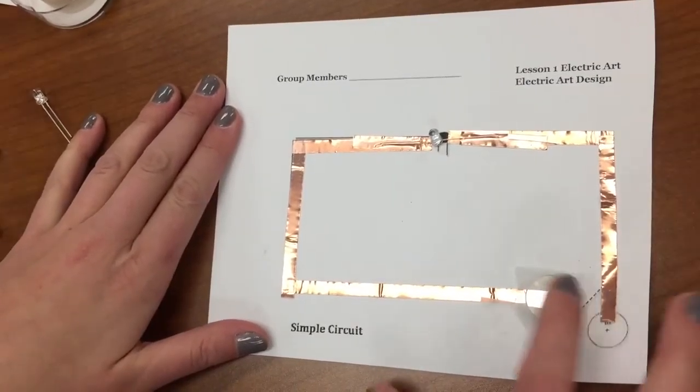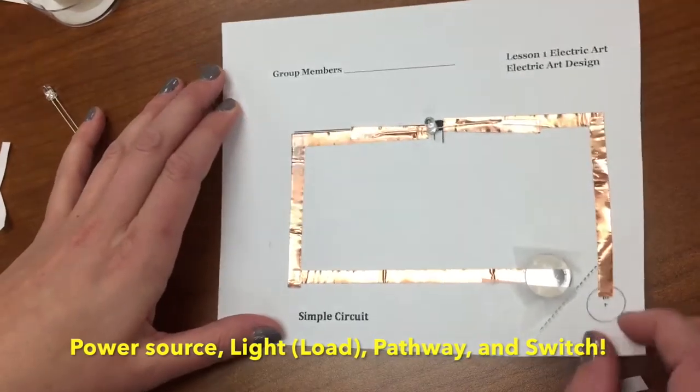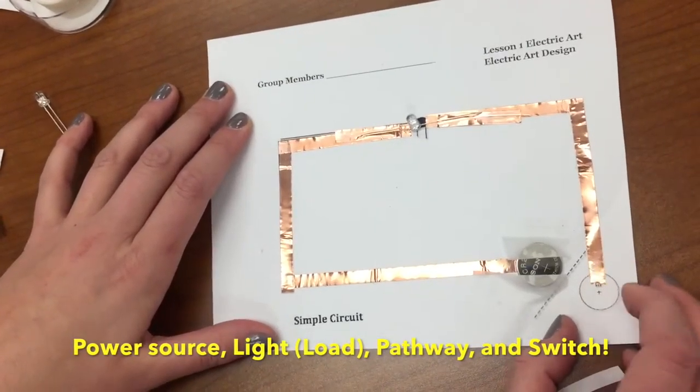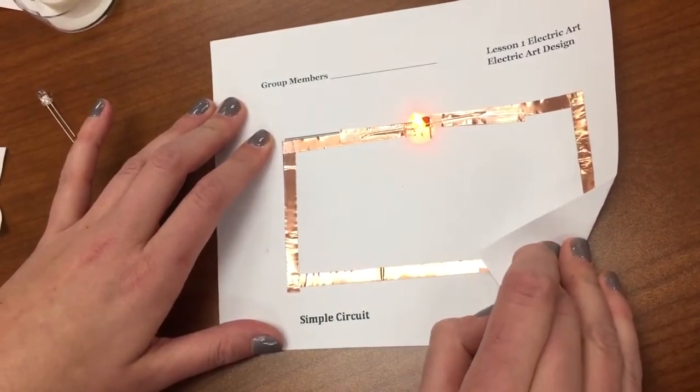So we have everything we need. The power source, the light which is the load, the pathway which the electrons are going to flow on. So here's our switch and we're going to go ahead and close our switch and see it light up.